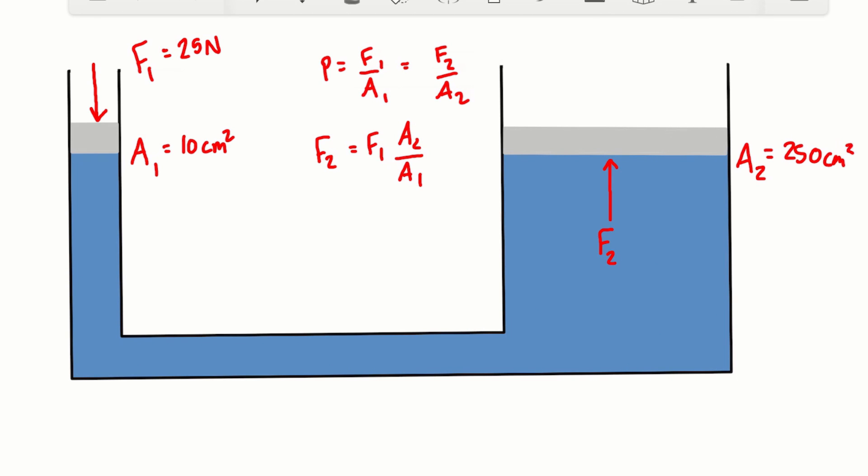So we're looking for what is F2, what's the force going upwards, which is going to be different than the applied force that we've applied on the left-hand side. So we can just plug these numbers into our expression here for F2.